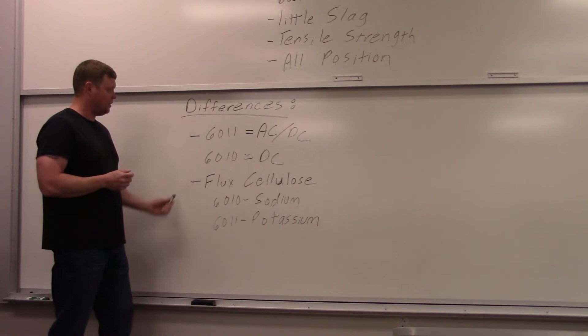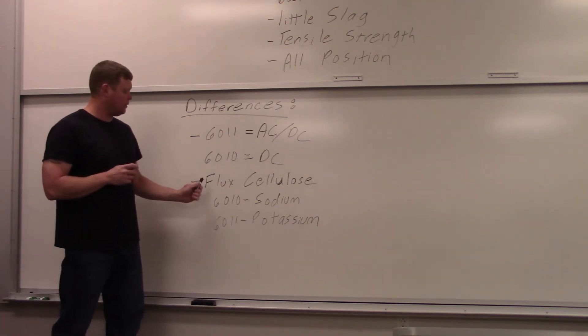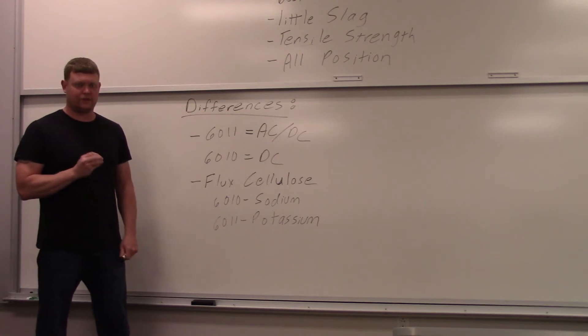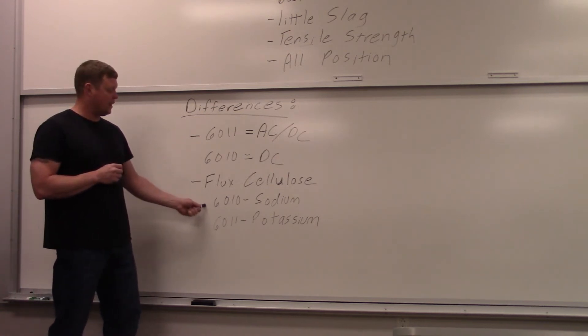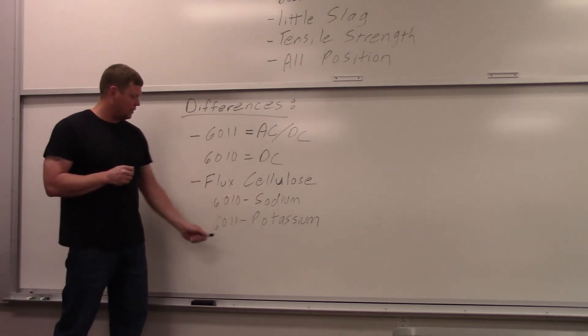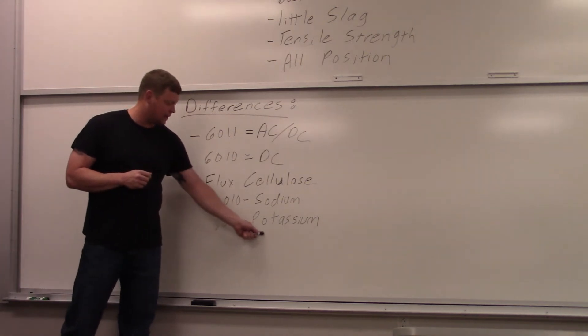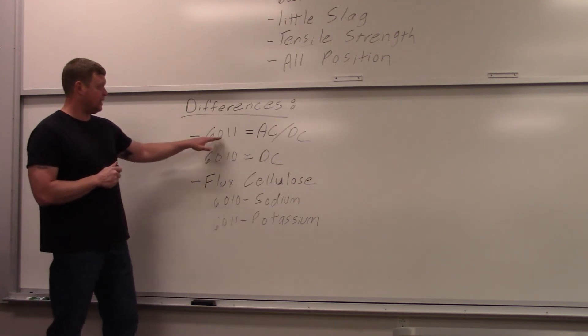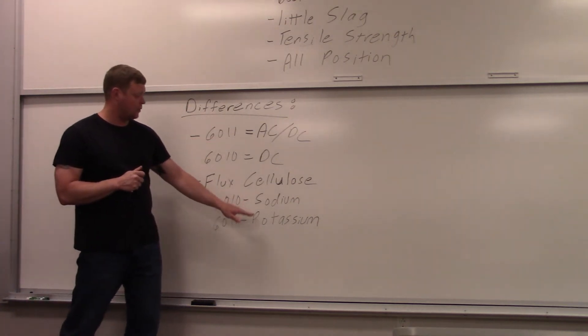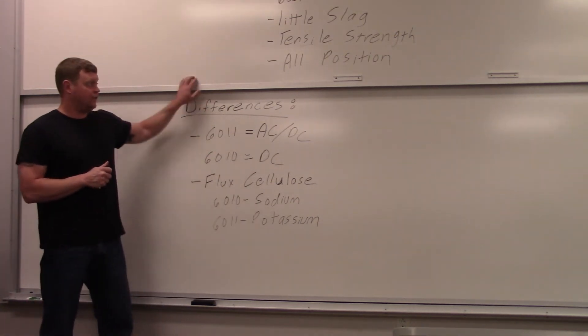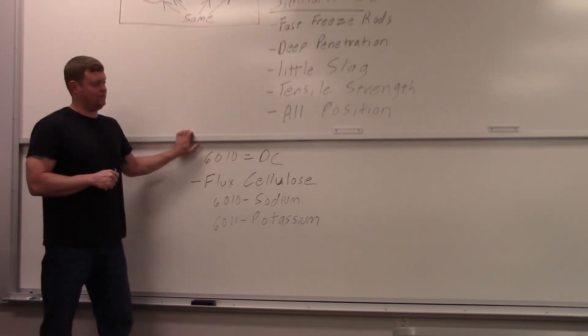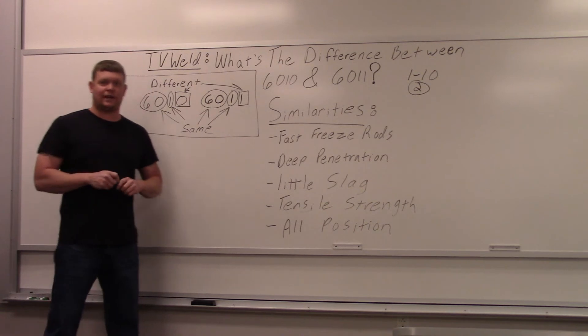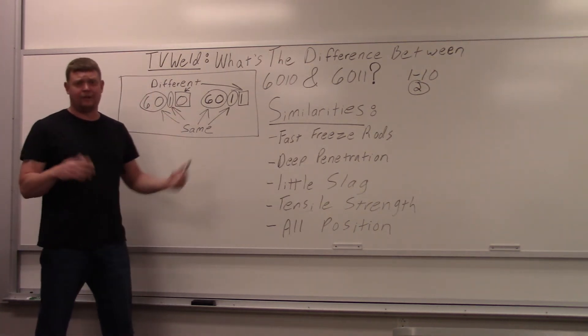And then the flux, there's a definite difference in that. Both flux has cellulose, so they're both highly cellulose-based fluxes. 6010 has sodium added to it, and 6011 has potassium added to it. That is the difference in 6010 and 6011. You can run this on AC, and one has sodium and one has potassium. Those are the only two differences in their eye. That's why many people in industry say 6010 and 6011 are the same thing.